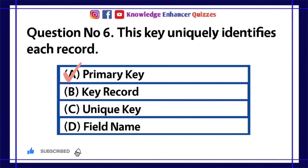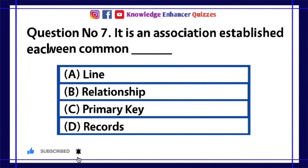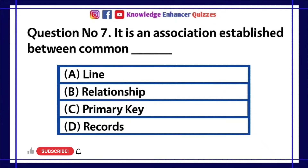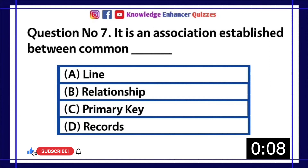Option A is the right answer. Question number seven: It is an association established between common fields. A) Line, B) Relationship, C) Primary key, D) Records. Option B is the right answer.